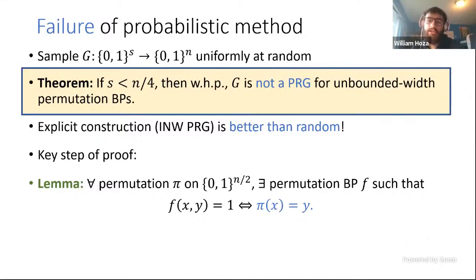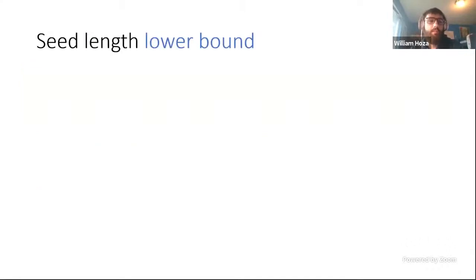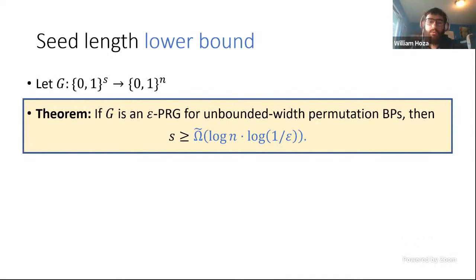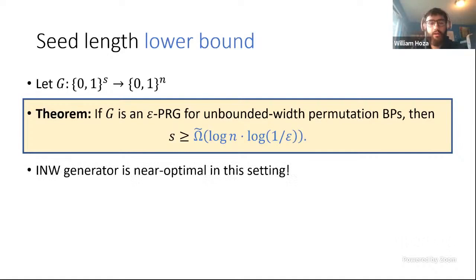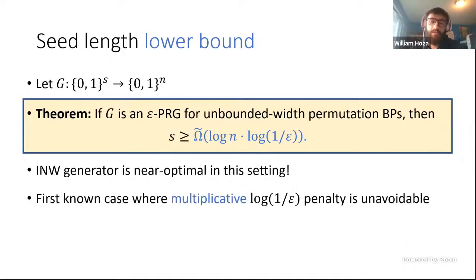Because the probabilistic method fails as a guide for this model, it raises the question: what is the optimal seed length? We proved that any pseudorandom generator for unbounded-width permutation branching programs must have seed length at least roughly log(n) times log(1/epsilon). This lower bound basically matches our upper bound for the INW generator. So in this setting, the INW generator is near-optimal — which is strange, because usually the optimal seed length for pseudorandom generators should be something plus log(1/epsilon), but here it is log(n) times log(1/epsilon).